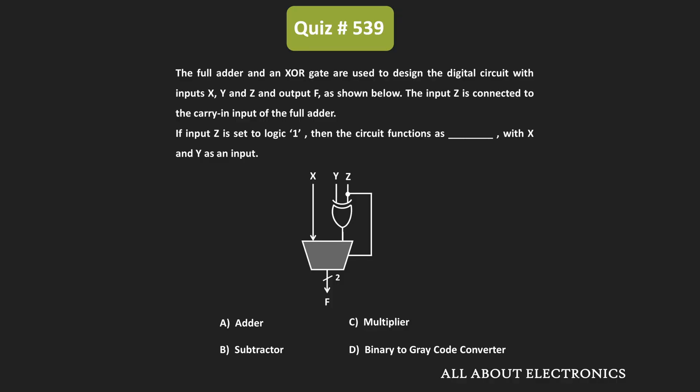Hey friends, welcome to the YouTube channel all about electronics. In this question, we have been given a digital circuit which consists of a full adder and an XOR gate. Here x, y, and z are the inputs to the given circuit, and the z input is connected to the carry-in input of the full adder. The z input is permanently set to logic one.